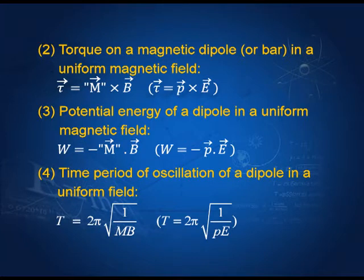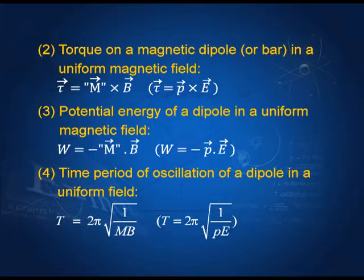The time period of oscillations of a dipole in a uniform field: if I have a uniform magnetic field and displace the dipole slightly, it starts oscillating. We can show these oscillations are simple harmonic — where acceleration is proportional to displacement and in the opposite direction. The time period of oscillation of a magnetic dipole in a uniform field is T = 2π√(I/mB), and in the electric dipole case it is T = 2π√(I/pE).